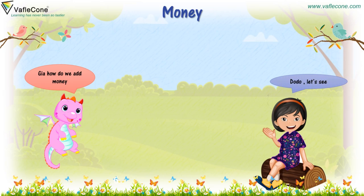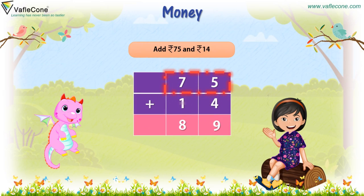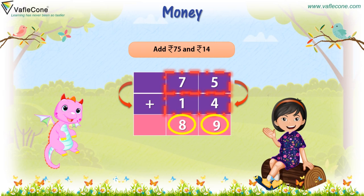Let's see. Add 75 rupees and 14 rupees. We start adding: 5 plus 4 is equal to 9 and 7 plus 1 is equal to 8. So the answer is 89.